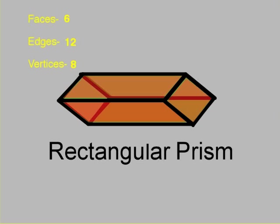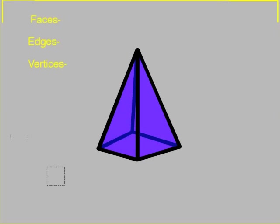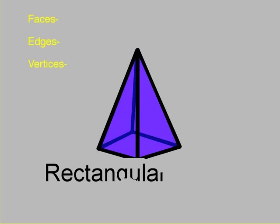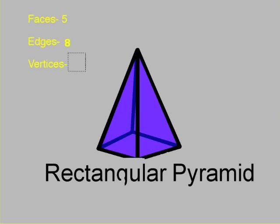Moving right along. Pause the video, come back to see how you did. The name of this shape is a rectangular pyramid. And again, as I stated in the beginning of the video, it's a rectangular pyramid because the base is made up of either a square or a rectangle. It has five faces, eight edges, and five vertices.